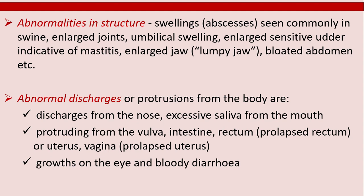Abnormal discharges or protrusions from the body include discharges from the nose, excessive saliva from the mouth, protrusions from the vulva, intestine, rectum, uterus or vagina, growths on the eye, and bloody diarrhea.